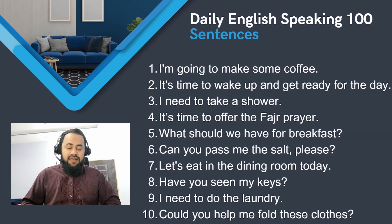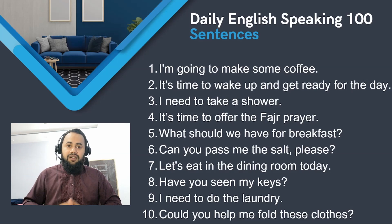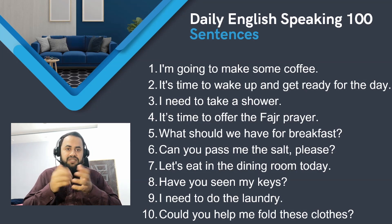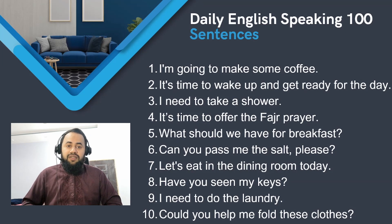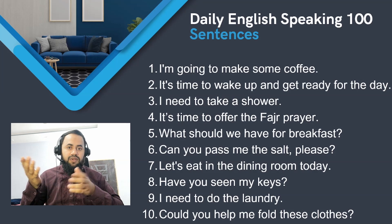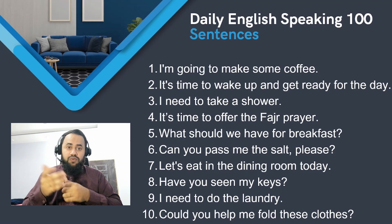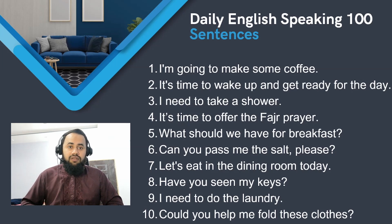The sixth sentence is: 'Can you pass me the salt, please?' When you are at the dining table you can say this — 'Can you pass me the salad?', 'Can you pass me the curry?', 'Can you pass me the bread?' These are useful at dinner or during a meal. The seventh sentence is: 'Let's eat in the dining room today.' The eighth is: 'Have you seen my keys?' — when you are going out and you ask someone at home about your keys, mobile, bag, or shoes. The ninth is: 'I need to do the laundry.'